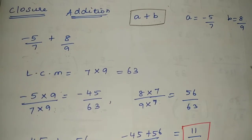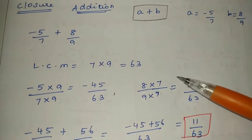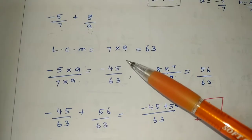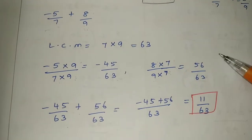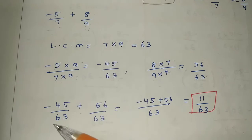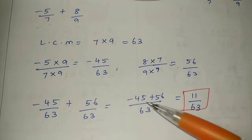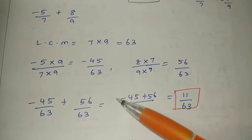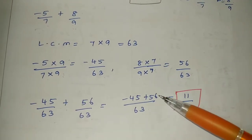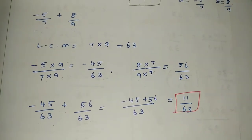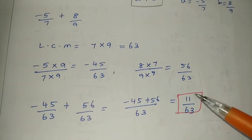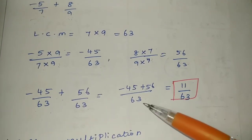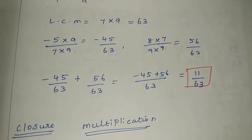So 9 sevens are 63, 8 sevens are 56. The two denominators become the same, so one denominator is written. We get minus 45 by 63 plus 56 by 63. Since the denominators are the same, we add the numerators: minus 45 plus 56. The greater number is 56, so the result is plus 11 by 63.